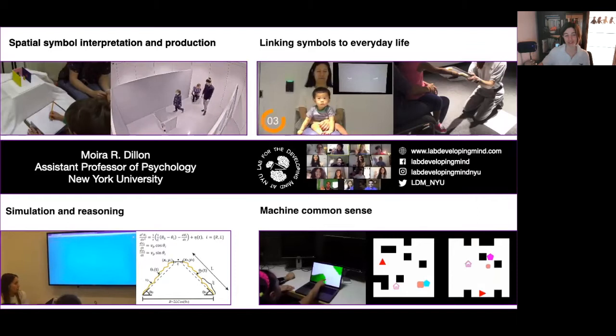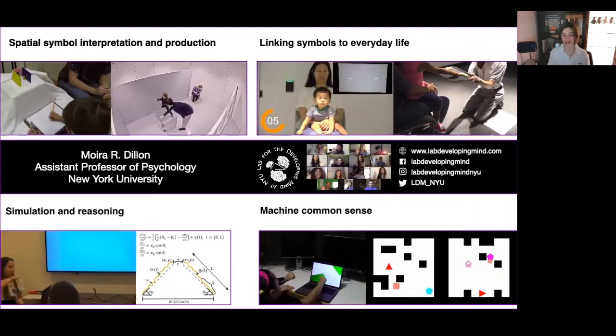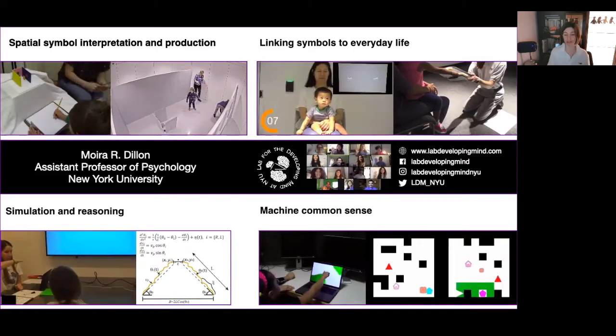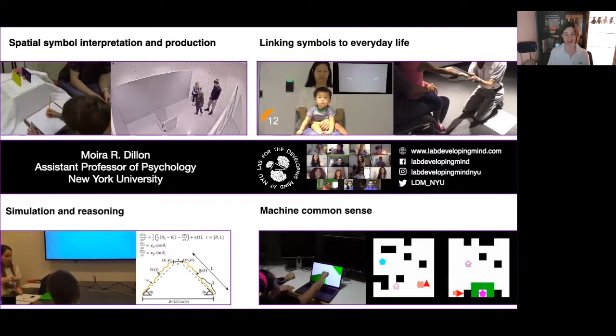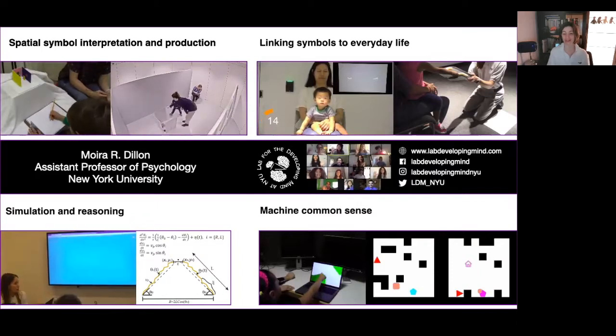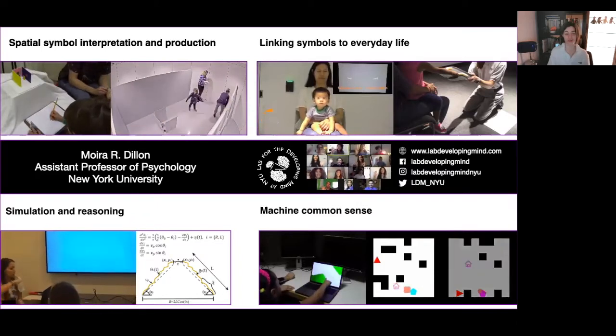The lab's interdisciplinary approach allows us to address how the basic mechanisms of perception and cognition about objects, places, agents, and social partners that we share with other animals underlie our uniquely human reasoning and influence the products of our diverse human cultures.